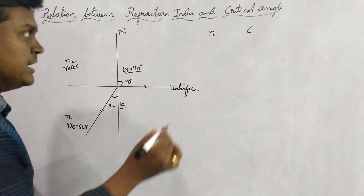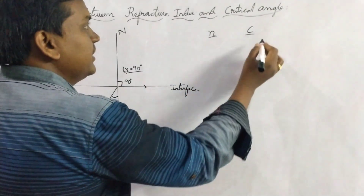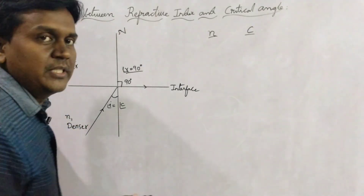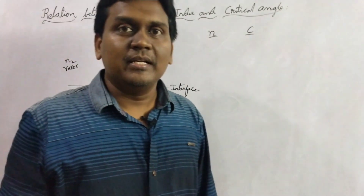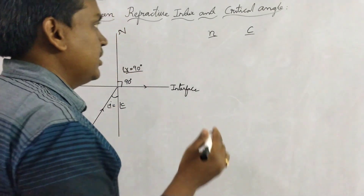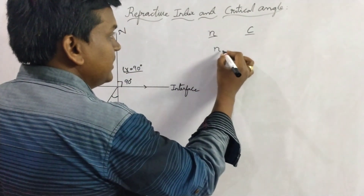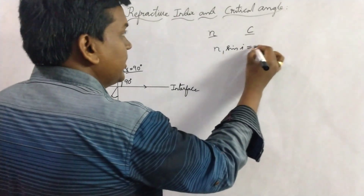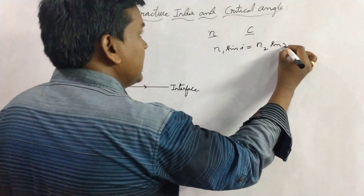Now let us see the relation between N and C with the help of Snell's law. We know that Snell's law is sin i by sin r equals a constant. Another form of Snell's law is N1 sin i is equal to N2 sin r.